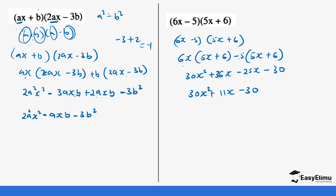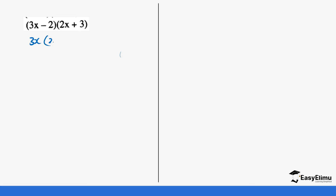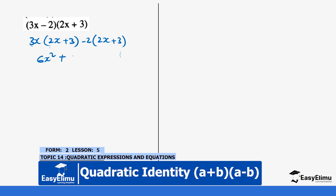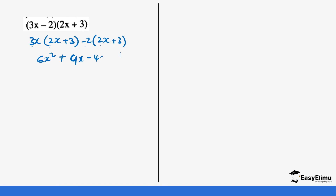Finally, the last question. This one is also not the same, so we just open it the normal way. So (3x minus 2)(2x plus 3): 3x into bracket (2x plus 3) minus 2 into bracket (2x plus 3). This gives 6x squared plus 9x minus 4x minus 6. Collecting like terms: 6x squared plus 5x minus 6. And that's your final answer.